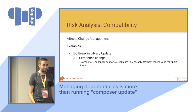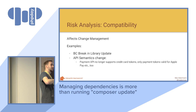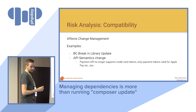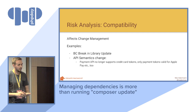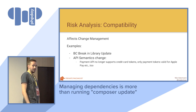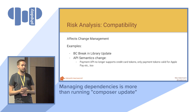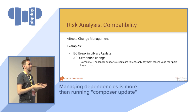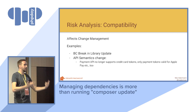The next type of risk is compatibility, which affects change management rather than the assembly of dependencies. The most common thing we've all experienced is a backward compatibility break in a library update. An alternative case for services is that the semantics of some API change. Something I've actually seen is a payment API that no longer supports credit card tokens because they now have generic payment tokens that also support something like Apple Pay. This change wasn't necessarily apparent in your code because it's still some string token, but there's a semantic change behind the API and you have to be aware that this change is coming.